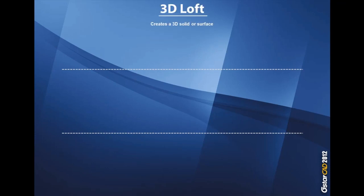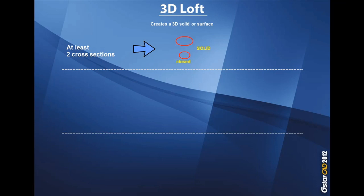With 3D Loft you can create a 3D solid or surface, but for creating a 3D solid or surface you will need at least two cross sections. These two cross sections can be closed entities or closed objects. You can also do this operation with open objects or open entities like an arc, a single line, or a spline. When you are performing 3D Loft with open objects you will get a surface.